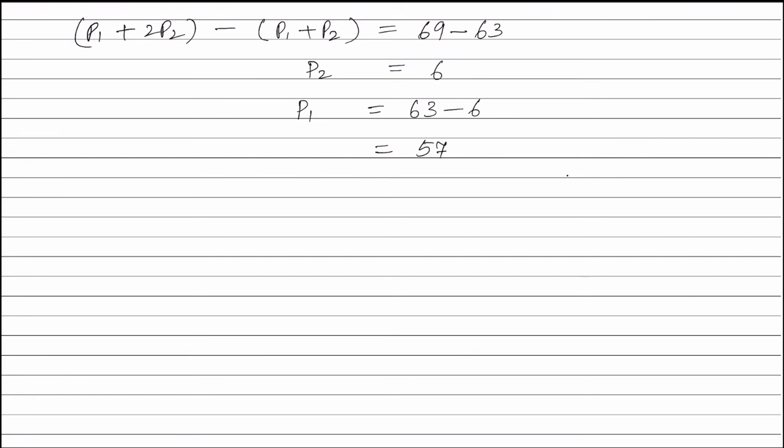The mole fraction of methane equals moles of methane divided by total number of moles, that is n1 divided by (n1 plus n2). This equals P1 divided by (P1 plus P2), because pressure is directly proportional to number of moles at constant volume and temperature. This equals 57 divided by 63. Solving this, we get mole fraction of methane equal to 0.9.